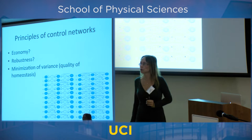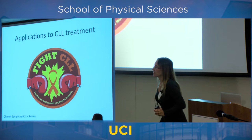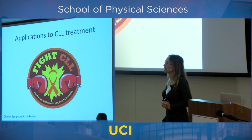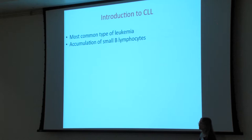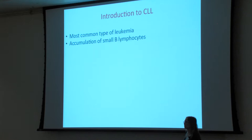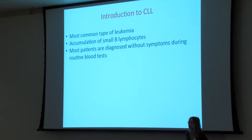The system that is very good at keeping homeostasis will be the one that has evolved. Finally, I want to talk about something useful: an application of our work to treatment. I'll concentrate on the cancer of the blood called CLL — chronic lymphocytic leukemia. This is the most common type of leukemia. It manifests as an accumulation of a certain type of white blood cells. Most patients are diagnosed by chance when they go for a routine blood test — there are no symptoms to start with.